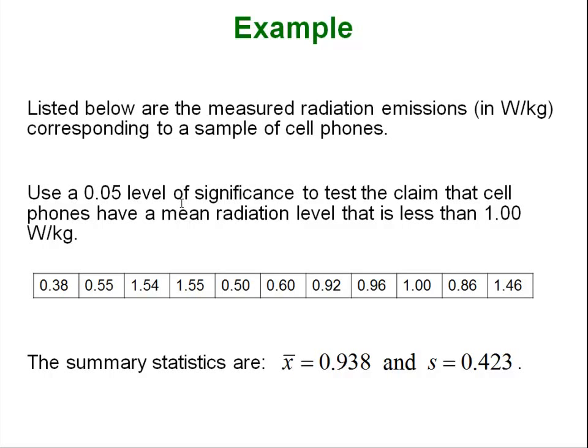Let's look at an example. Listed below are 11 measured radiation emissions in watts per kilogram corresponding to a sample of cell phones. We are going to use a 0.05 level of significance to test the claim that cell phones have a mean radiation level that is less than one watt per kilogram. Now you can do this yourself. You can stick all those numbers into your calculator or StatCrunch or whatever and get the summaries. We have a sample mean of 0.938 and a standard deviation of 0.423. Now we haven't talked about this before but we are claiming that the mean is less than one.